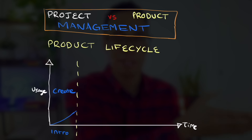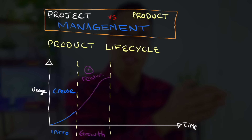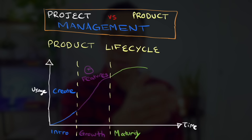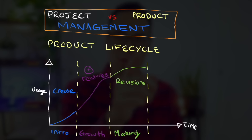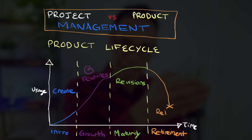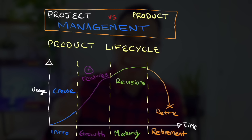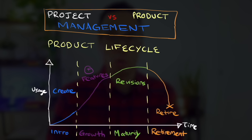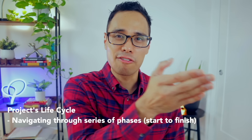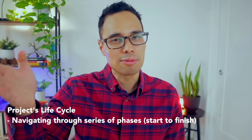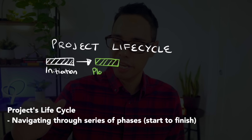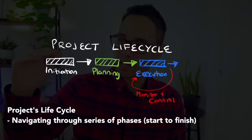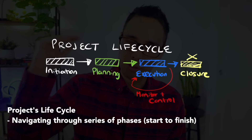The product life cycle starts from infancy as a sketch on a piece of paper, to the growth stage where features are created and developed. Afterwards, the product matures and continues to be refined to meet the customer's needs. Lastly, the product retires due to a change in the market or customer needs. A project's life cycle, on the other hand, is a series of phases a project goes through from start to finish: initiating, planning, execution, monitoring and controlling, and closure.